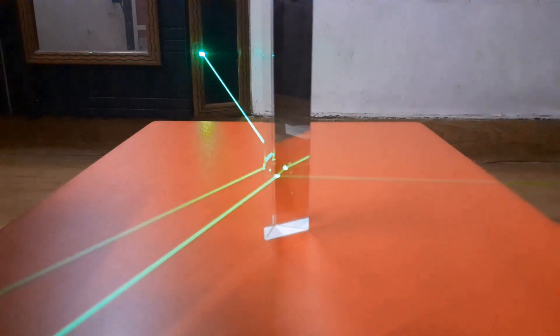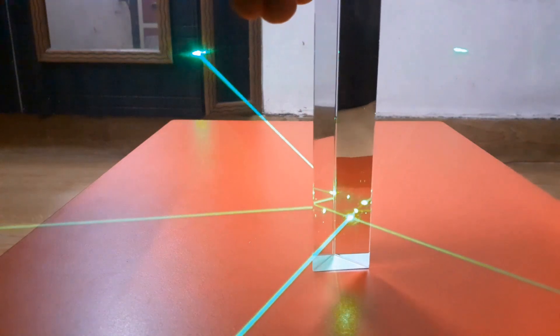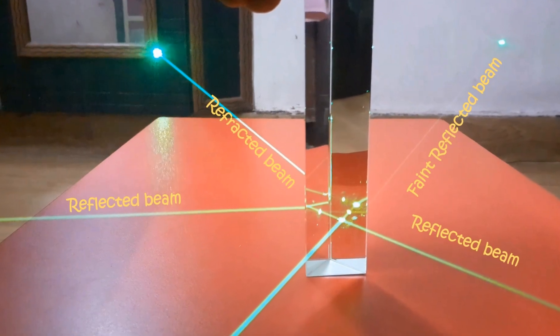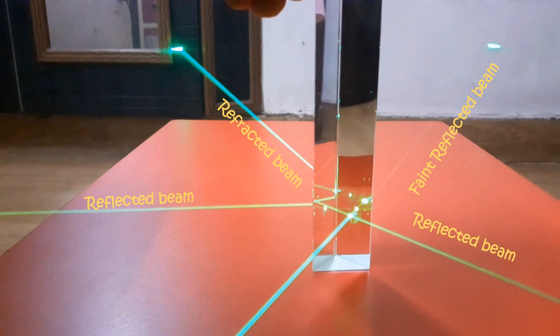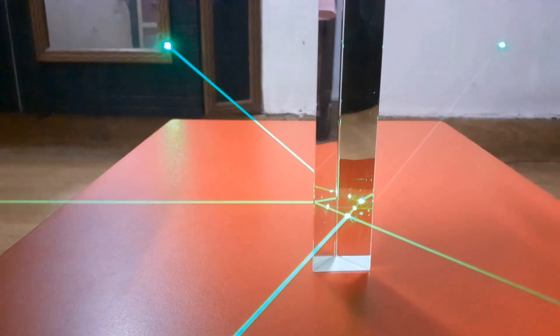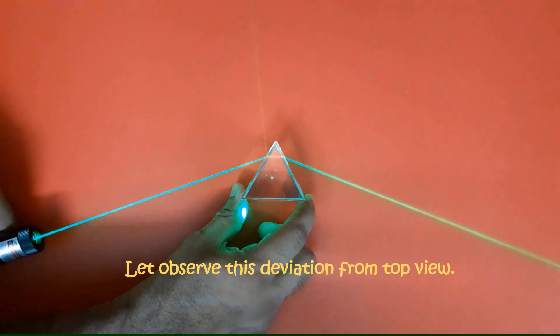One more thing: in this photographic prism you can also see reflected and internal reflected beams. We will make a separate YouTube video on this topic. Subscribe our channel and press the bell icon to get notifications.